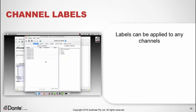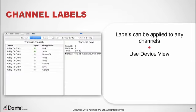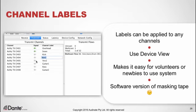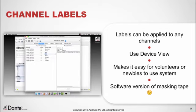In addition to naming devices, you can use the device view to label individual channels of transmitters or receivers. This is a great tool for quickly identifying individual channels in a live mix and makes it easy for volunteers or newcomers to use the system. You can think of it as a software version of the masking tape we typically find on consoles.